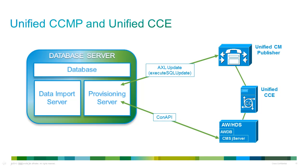Unified CCMP utilizes facilities within both AXL and CONAPI to execute SQL directly against the database. AXL execute SQL is used for Unified CM, allowing us to update and retrieve data with minimal network load, while CONAPI manages query execution into Unified CCE and allows Unified CCMP to optimize requests by utilizing bulk APIs for operations like reskilling. Unified CCMP's data import component runs microflows that connect to Unified CM via AXL and to the administration and data server via CONAPI. Changes are written into Unified CCE through the CONAPI interface, but Unified CCE's information is imported by the data import server through a direct OLEDB database connection.